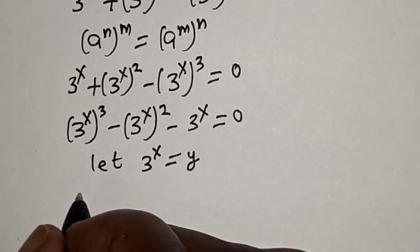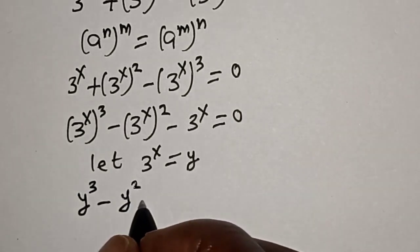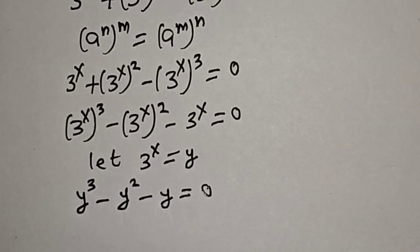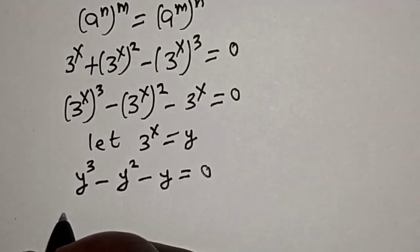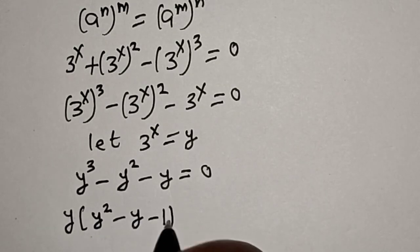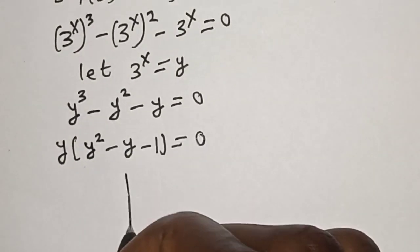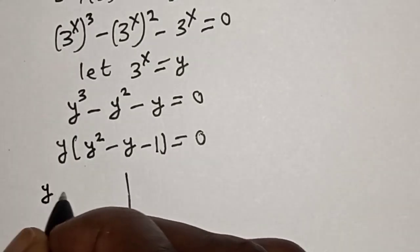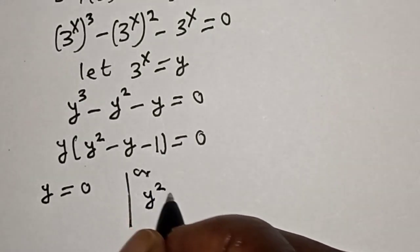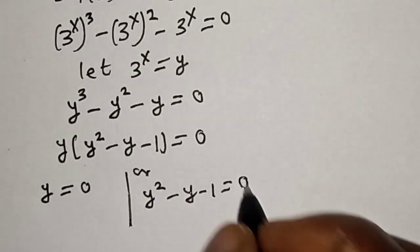Then we have Y cubed minus Y squared minus Y is equal to 0. So Y is common — let's factor Y out. Y into Y squared minus Y minus 1 is equal to 0. Here we have two cases: Y is equal to 0, or Y squared minus Y minus 1 is equal to 0.